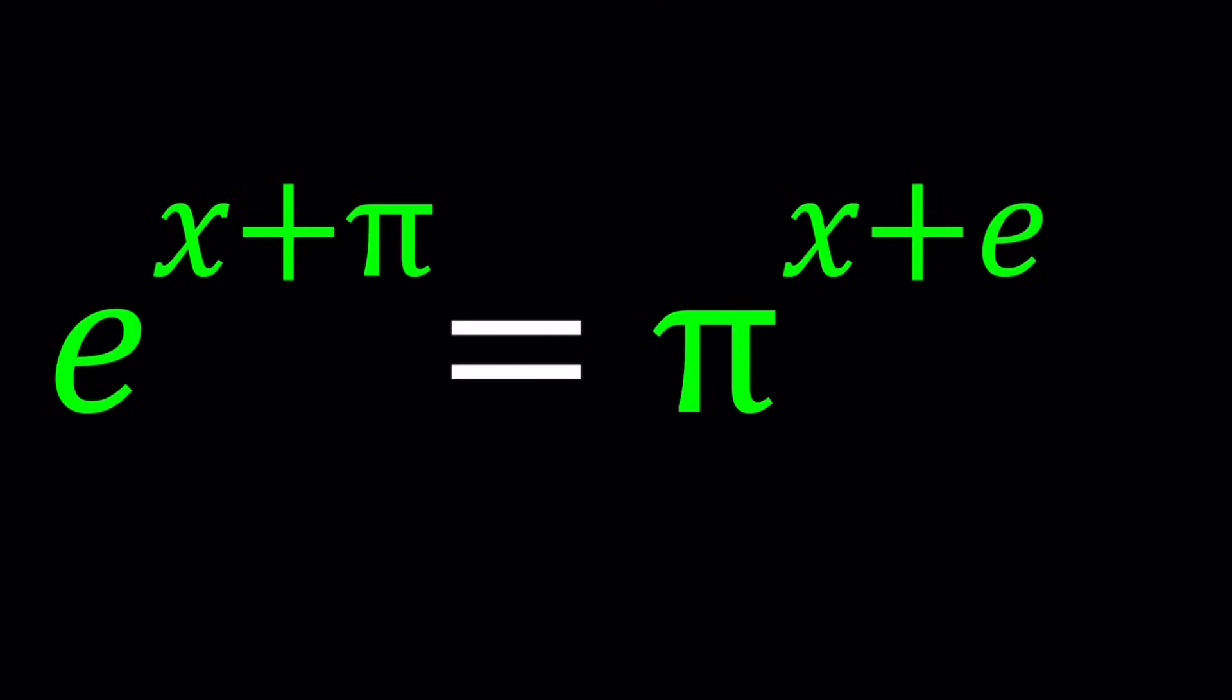A lot of times students ask me how many digits of pi did you memorize. My answer is two digits after the decimal point, one and four. That's all I need.